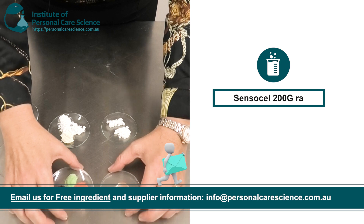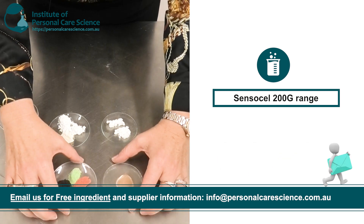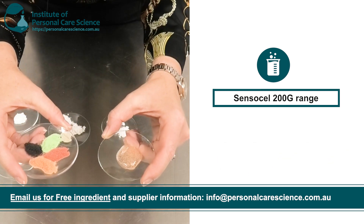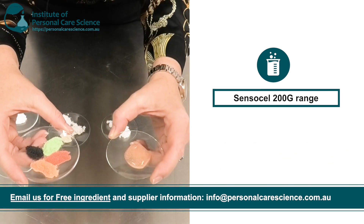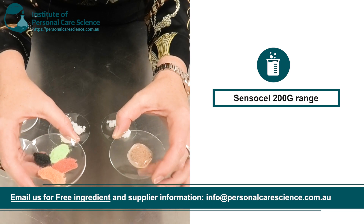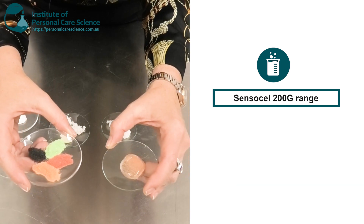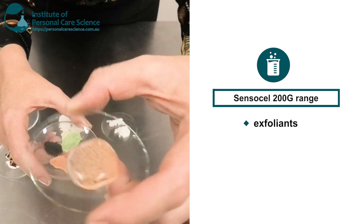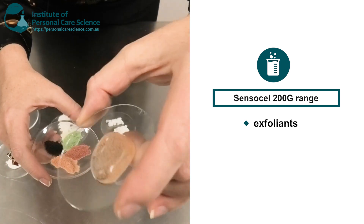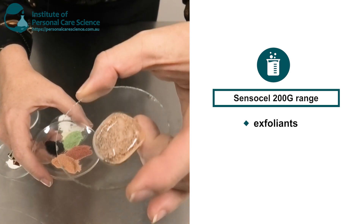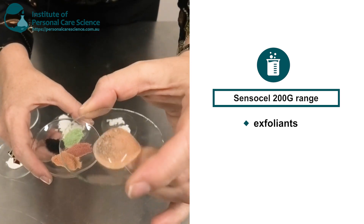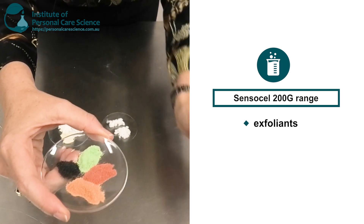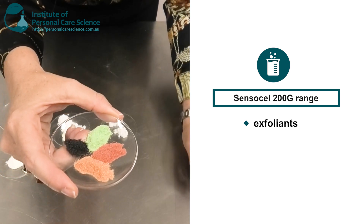First and most obviously, let's take a look at their Sensor Cell 200G range. This is a globular form, around 300 micrometre particle size, and they are used as exfoliant. Here you can see a finished product effect with the 200G as an exfoliant source, and they have them in a range of different colours.